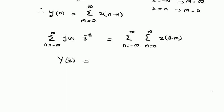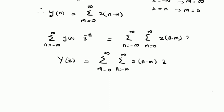On the right side, we interchange the summations, so that we have summation m equal to 0 to infinity, and then summation n equal to minus infinity to plus infinity of x of n minus m times z power minus n. This is the definition of the Z-transform of x of n minus m, that is, a delayed signal.